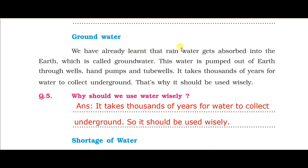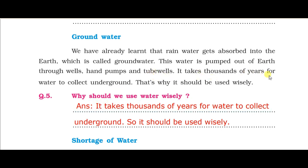Ground water — we have already learned that rain water gets absorbed into the earth, which is called ground water. This water is pumped out of the earth through wells and tube wells. It takes thousands of years for water to collect underground.